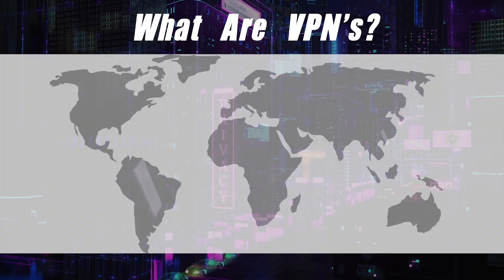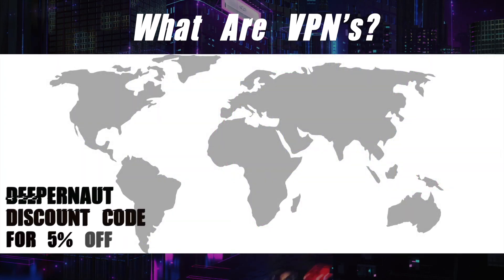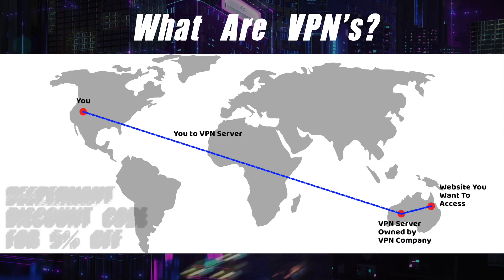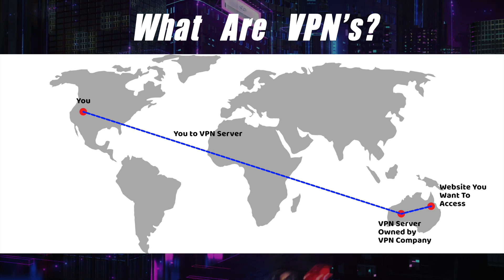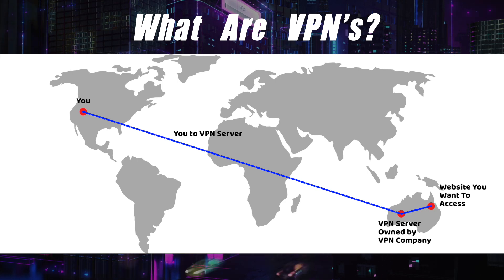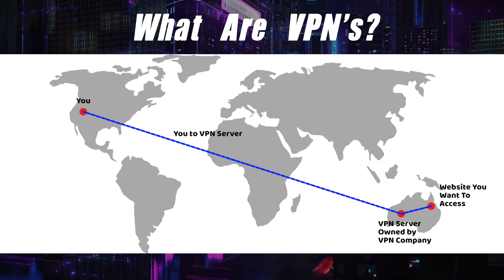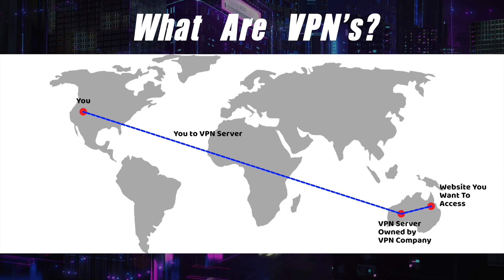A VPN is a virtual private network, and the DPN and VPN are pretty similar. Imagine that this is the world and you're in the northwest of the US, and you connect to a VPN server in Australia — owned and controlled by a VPN company, for example NordVPN or ExpressVPN. You want to access a website in Australia, so you connect to the VPN server, then connect to the website. The website passes the information to the VPN server, and the VPN server passes it back to you.